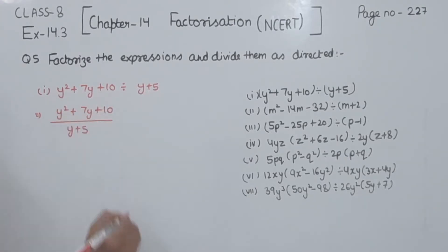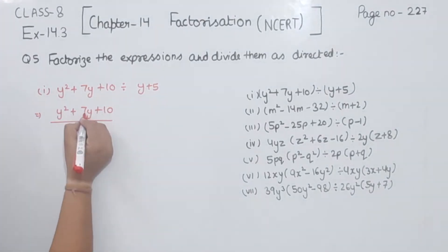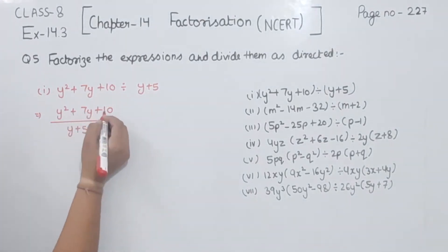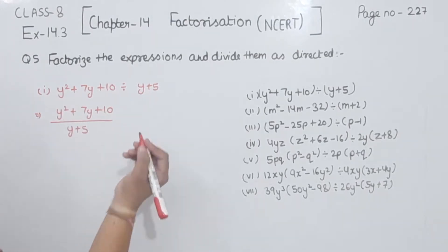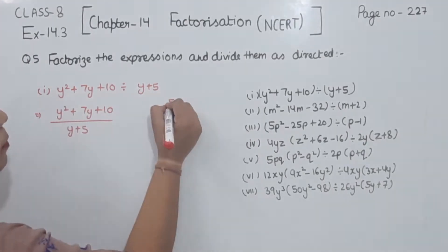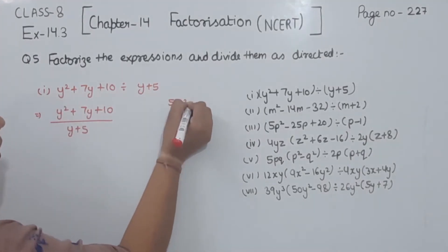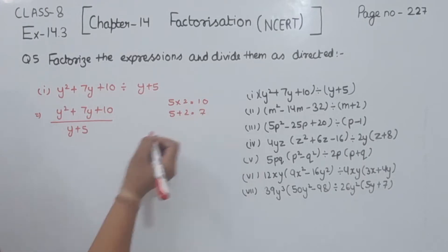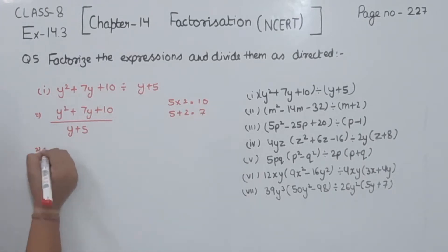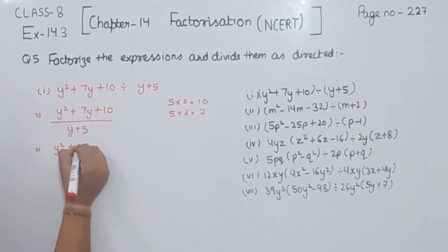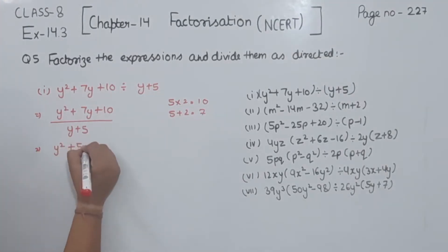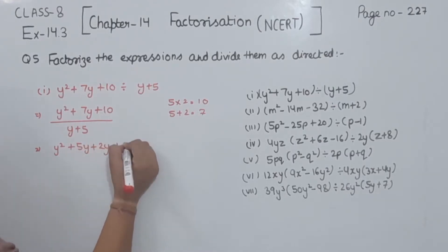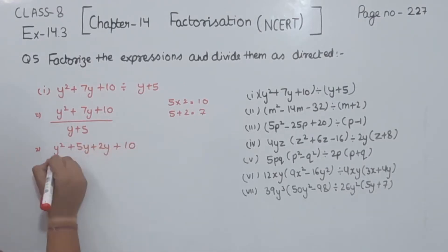Now we are going to factorize this one. We have to find two numbers which when added will give 7 and when multiplied will give 10. So 5 multiplied by 2 gives 10 and 5 plus 2 gives 7. So I am going to write here y squared plus 5y plus 2y plus 10.